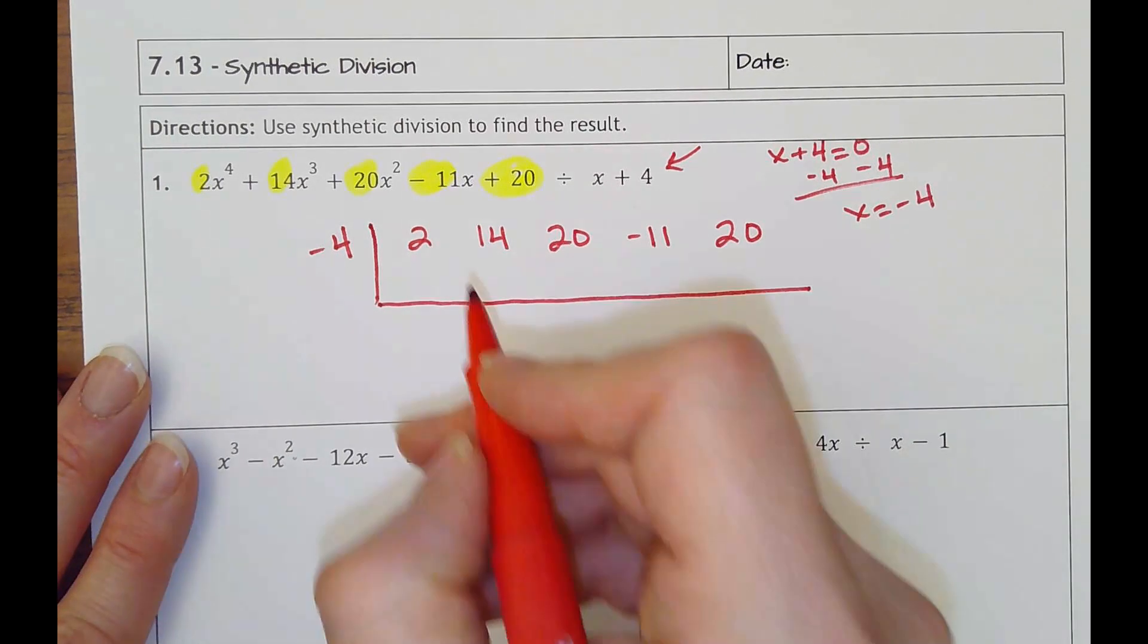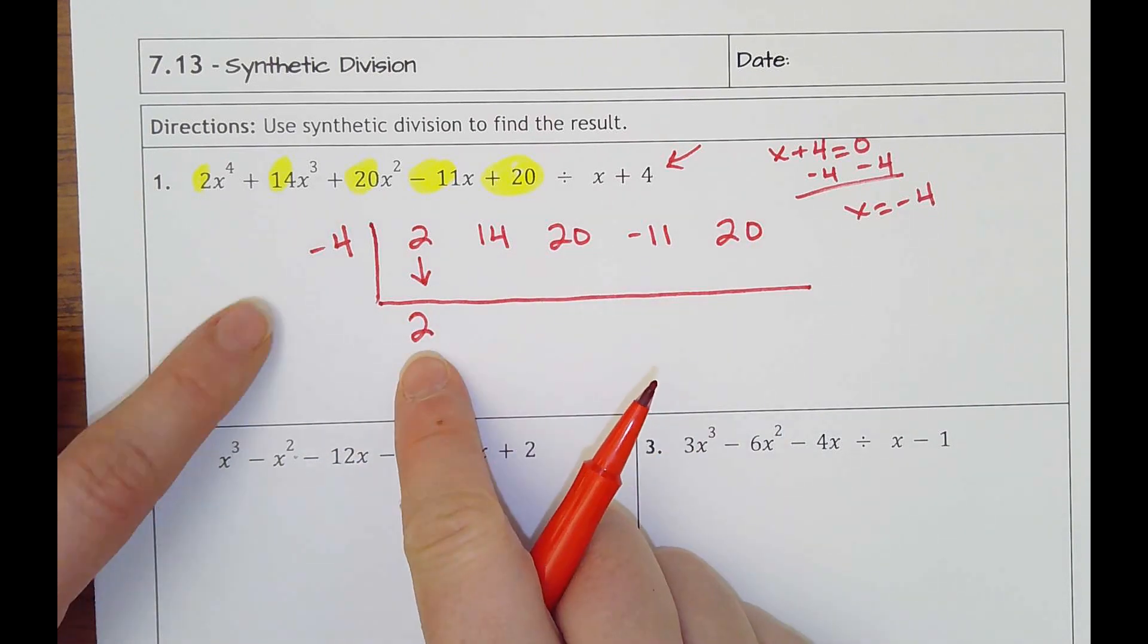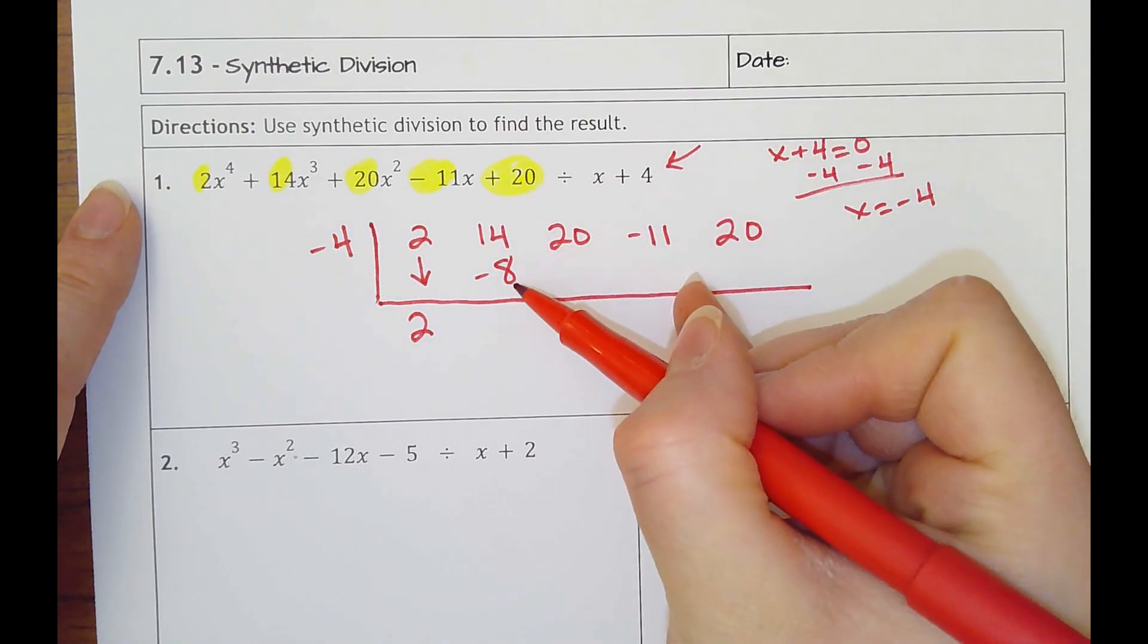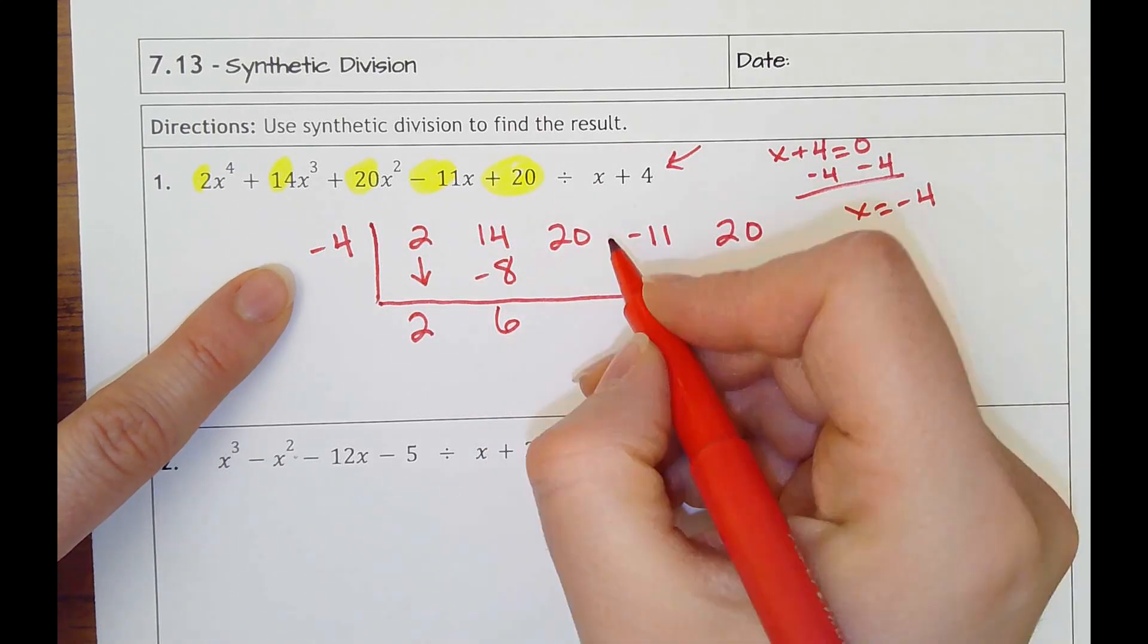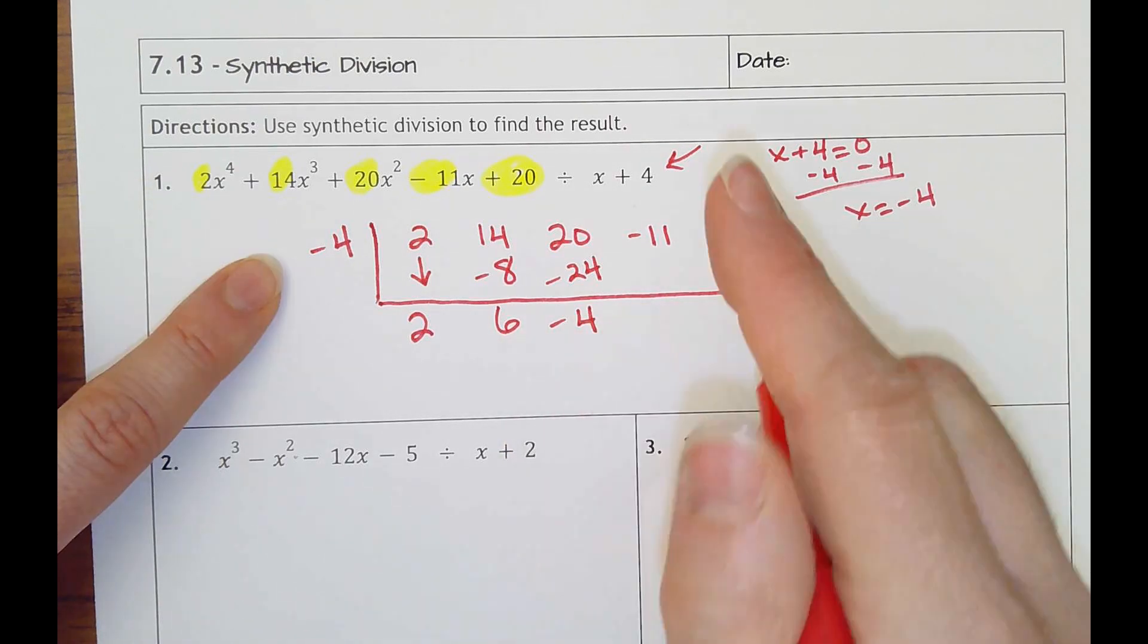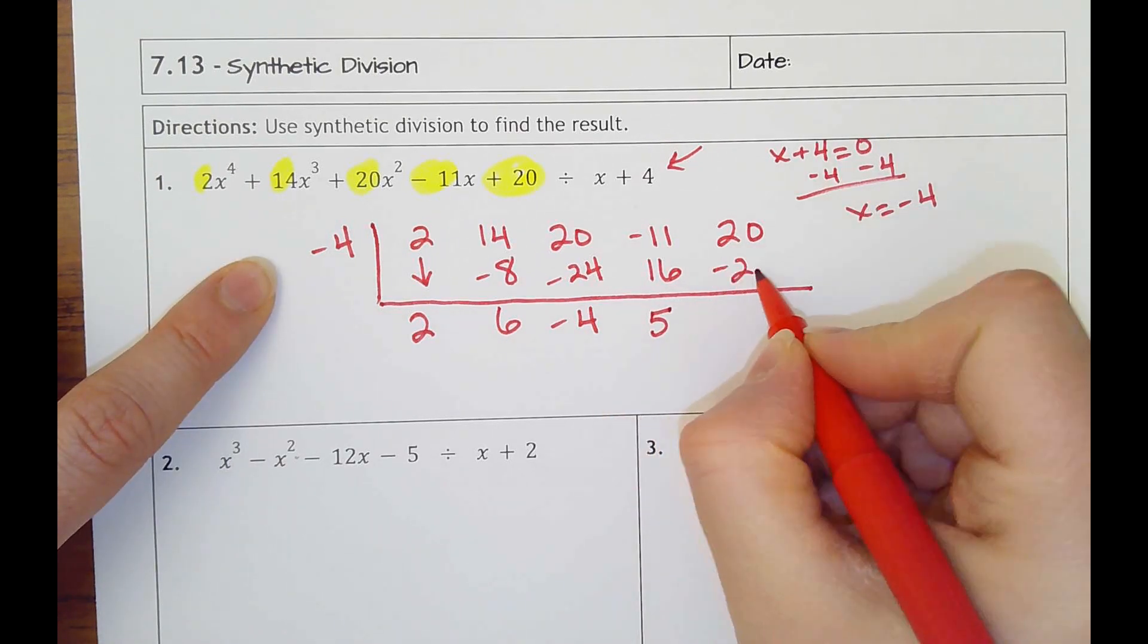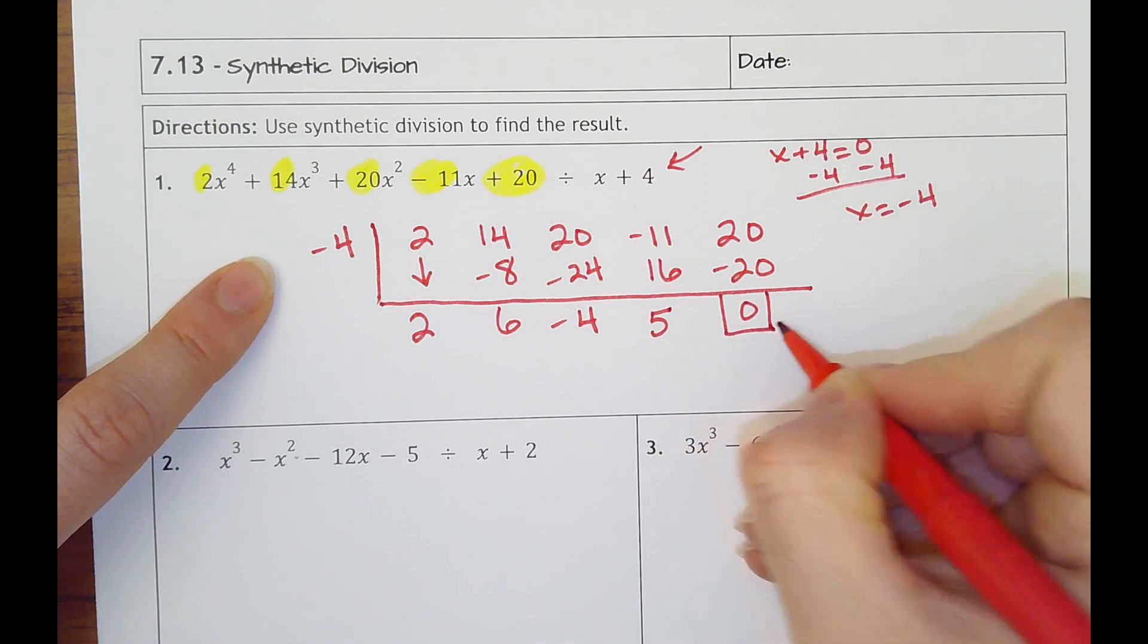I always bring down the first number to get started. Then from there I multiply 2 times negative 4 is negative 8. Then I'm adding or subtracting the columns: 14 minus 8 is 6. Then I start over and multiply negative 4 times 6 is negative 24, 20 minus 24 is negative 4. Negative 4 times negative 4 is 16, 16 and negative 11 makes 5. 5 times negative 4 makes negative 20, and 20 minus 20 makes 0.